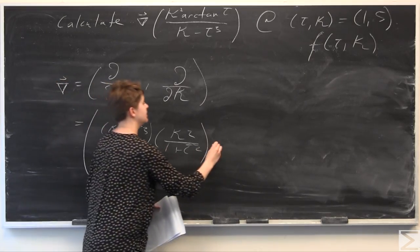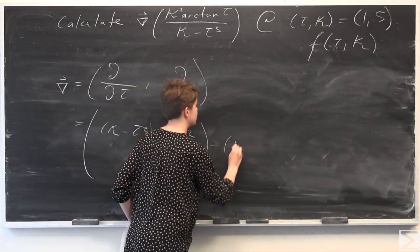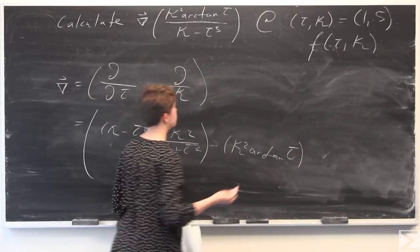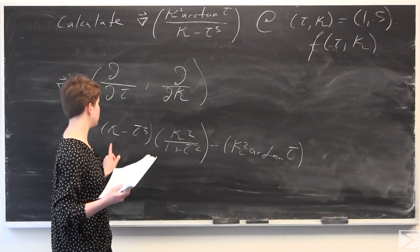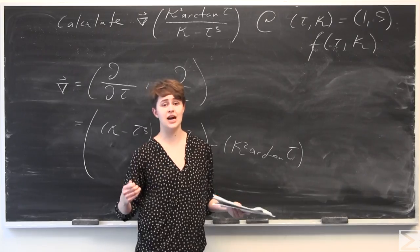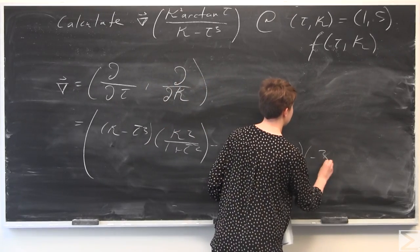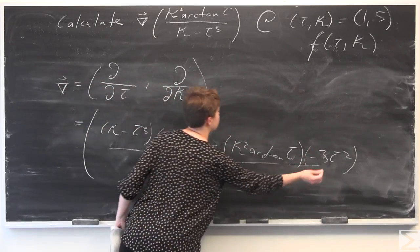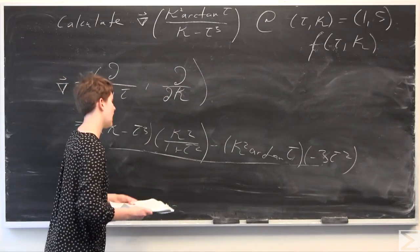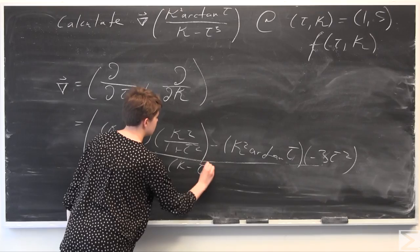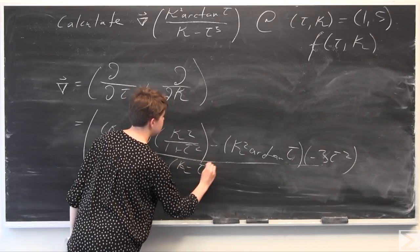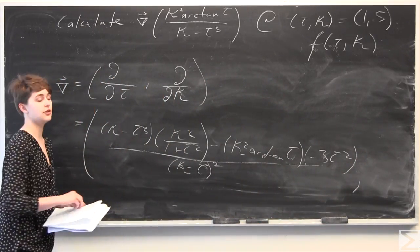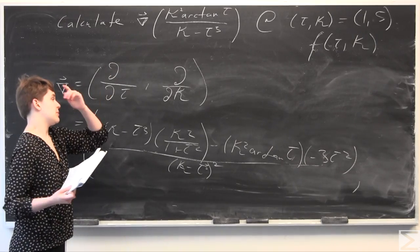Low d high, less high d low — so minus kappa squared times arctangent of tau. Then we differentiate the denominator with respect to tau, giving negative 3 tau squared. Underneath everything, low squared: the denominator squared is kappa minus tau cubed, all squared. That's the partial derivative of the function with respect to tau.